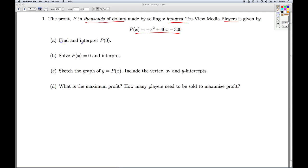Part A, we're asked to find and interpret P of 0. So to find P of 0, we replace X with 0 in the formula. And so we find P of 0 to be negative 300. Now we need to interpret what that means in this situation. Well, X equals 0 corresponds to selling 0 players. So this means we don't sell any players at all.